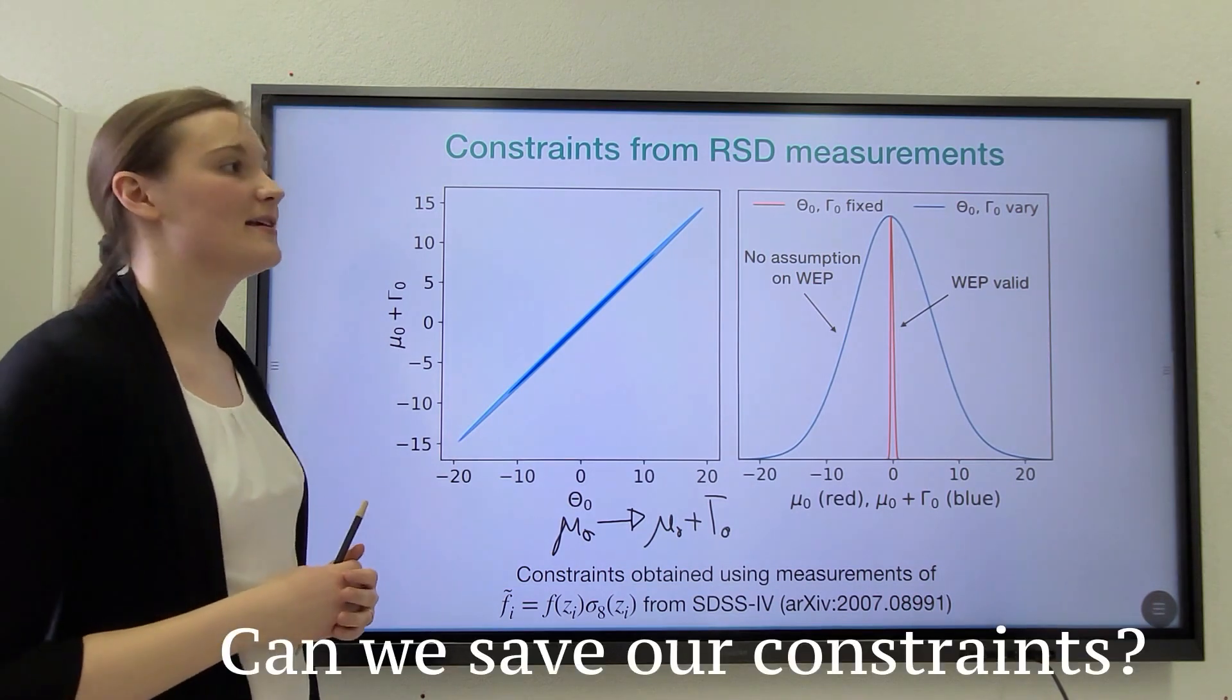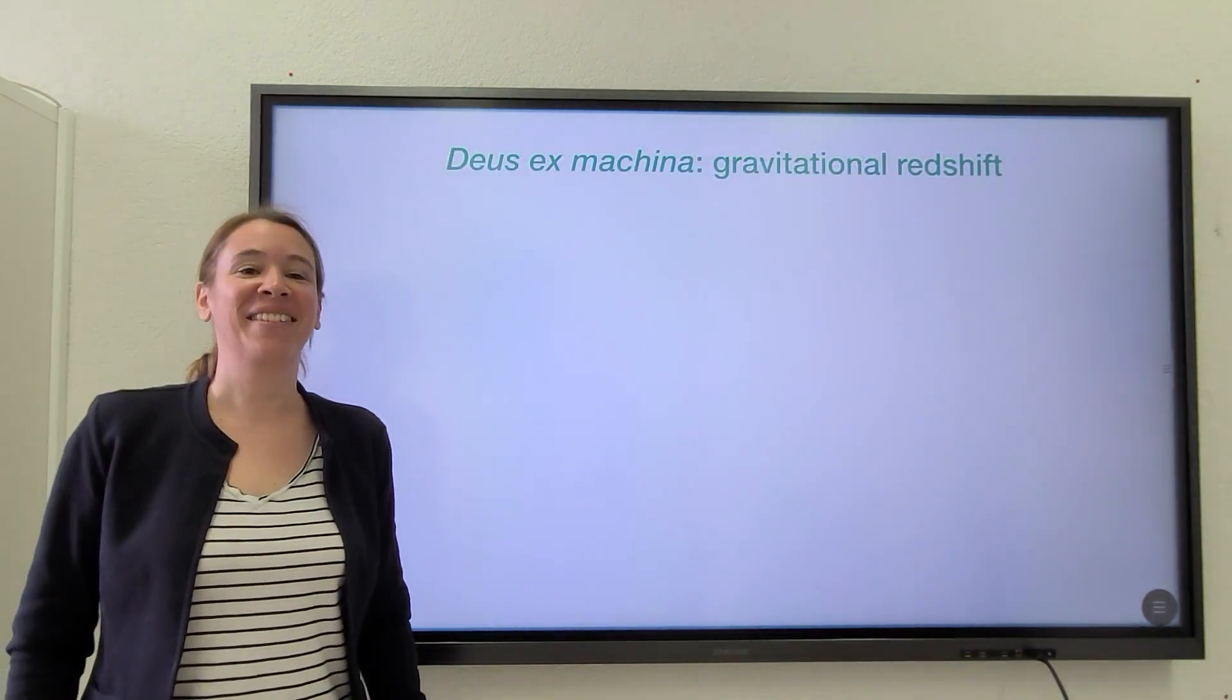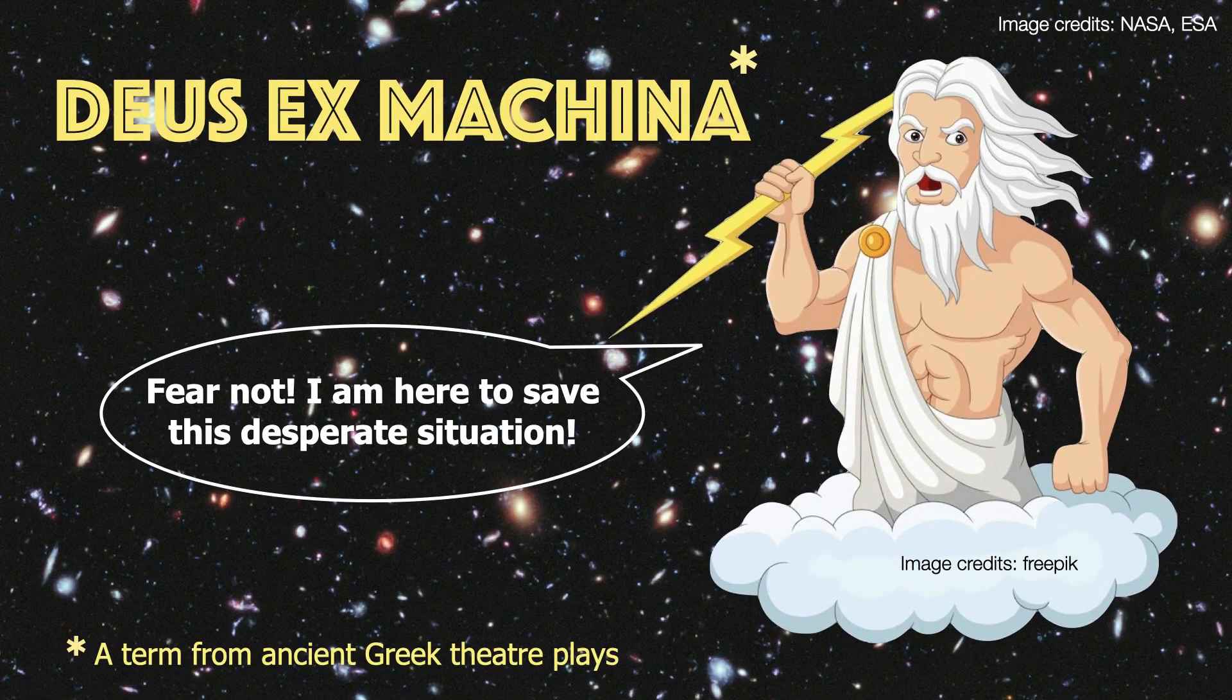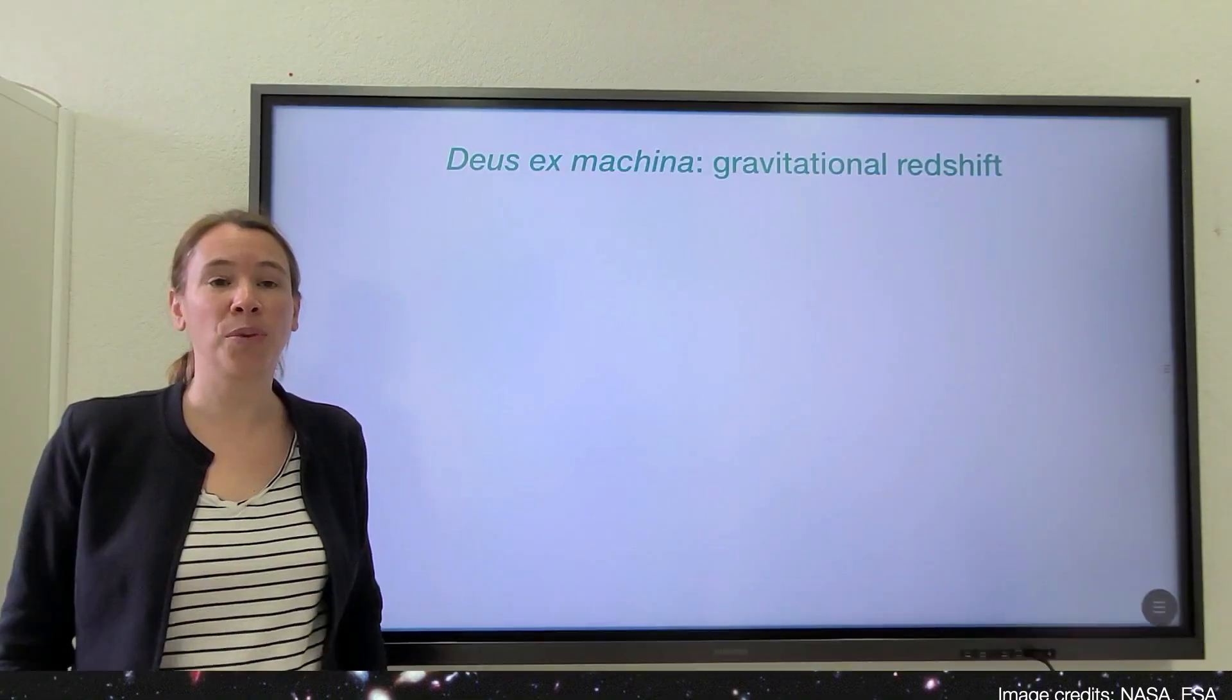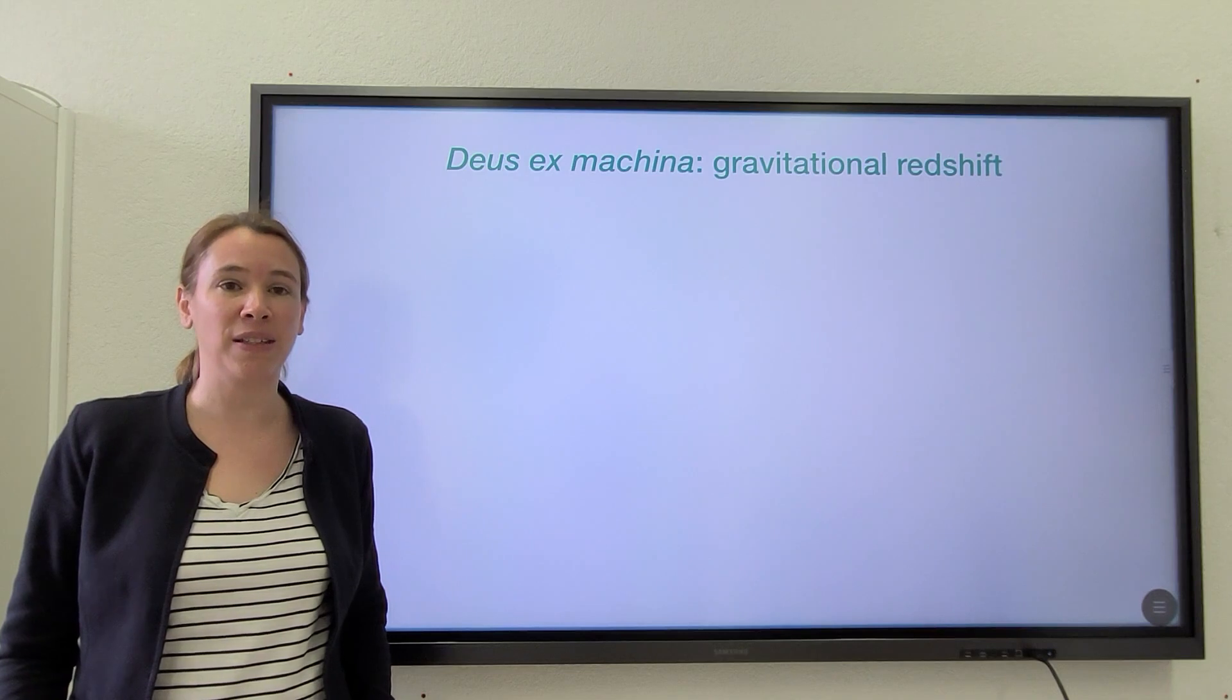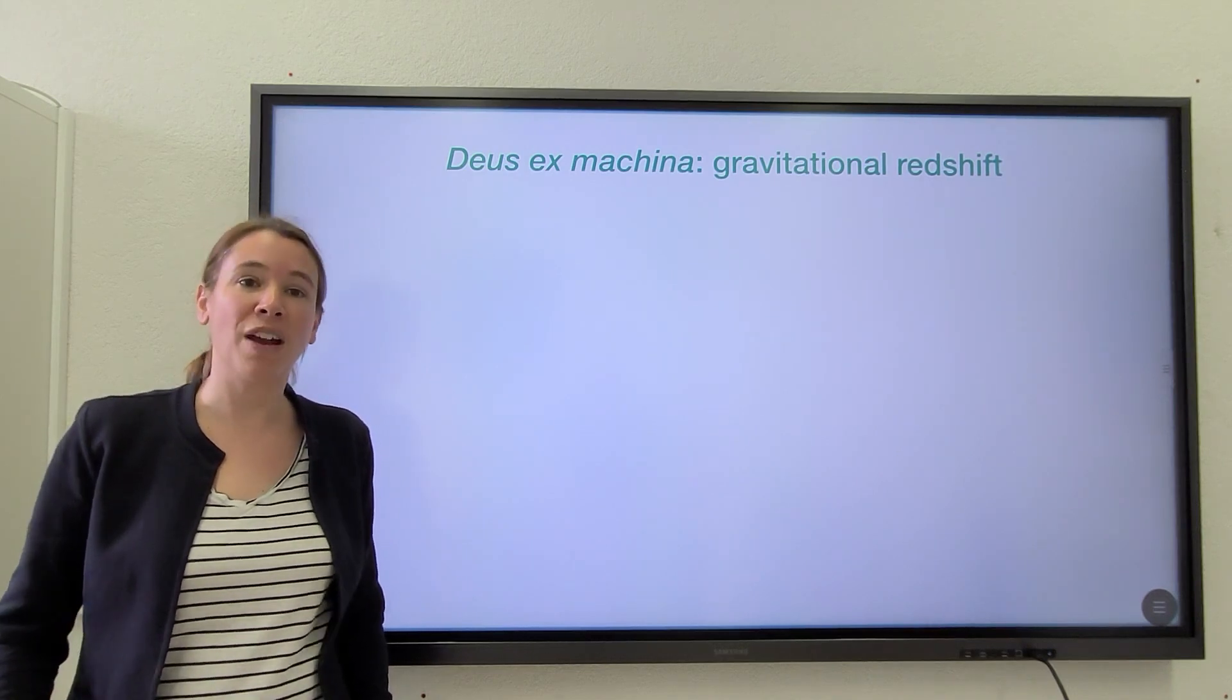Now the question is, can we save our constraints? Indeed, we can. As in all good plays, there is a deus ex machina, who saves the situation and allows us to recover tight constraints on modifications to general relativity. And in our case, this savior is the effect of gravitational redshift.